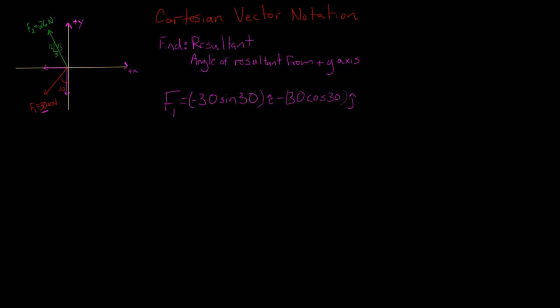So after we get F1, we want to break up our F2. So F2 is sort of the same. We want the x direction and then we want the y direction. So our F2 is going to be equal to 26, so minus 26 because it points against this positive x direction. Minus 26.